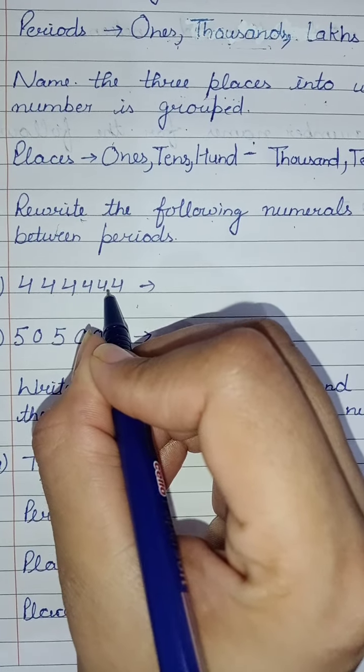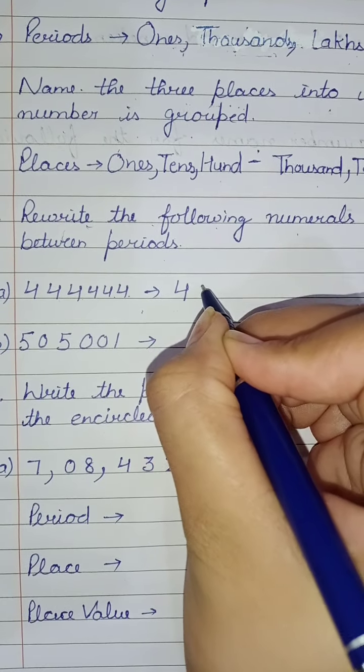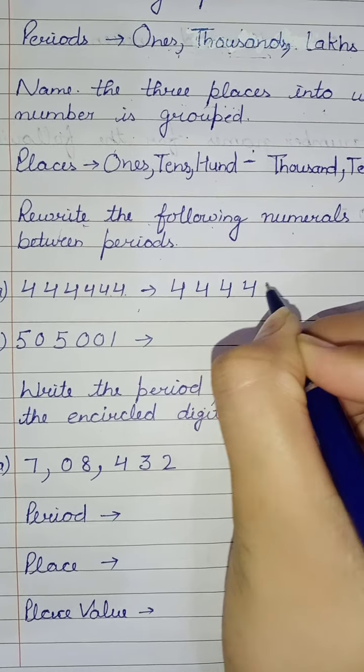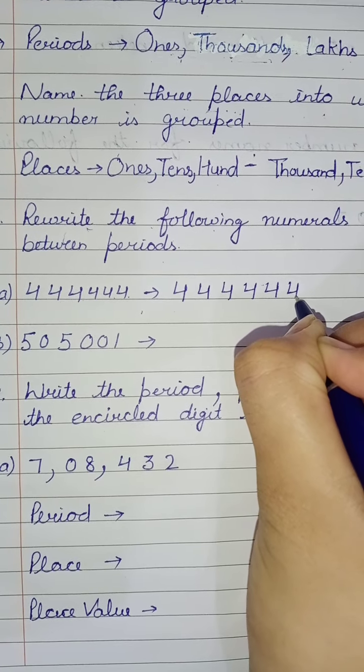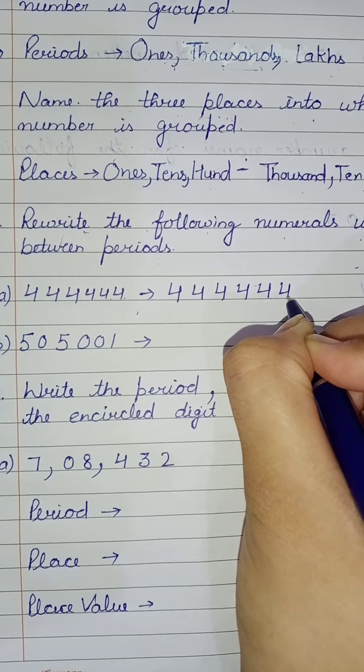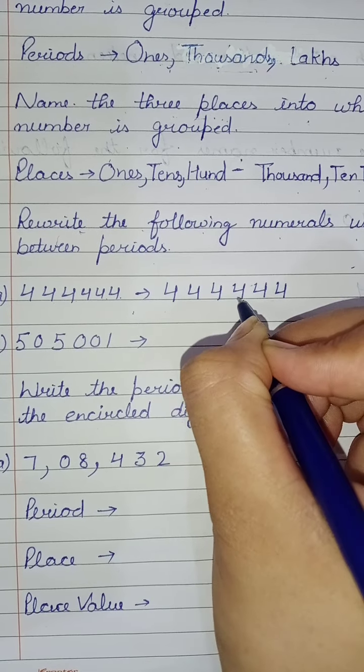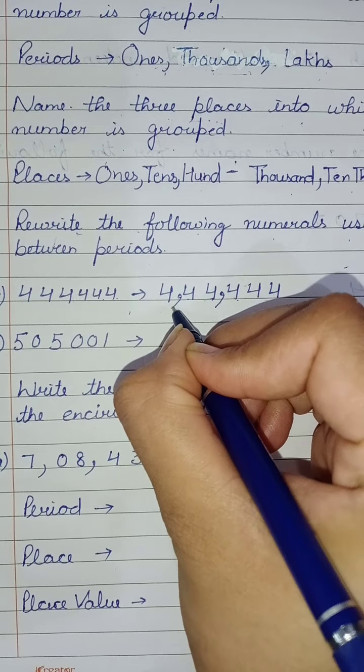1, 2, 3, 4, 5, 6 - six times I will write here six 4s. Now we have to write commas between periods. I have told you that the periods are ones, thousands, and lakhs. How many groups? Three. Here commas will come, then commas will come.